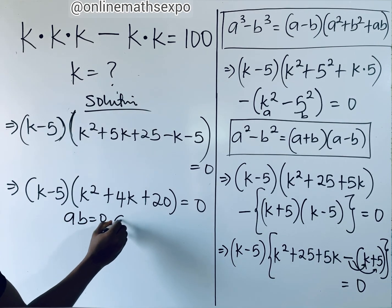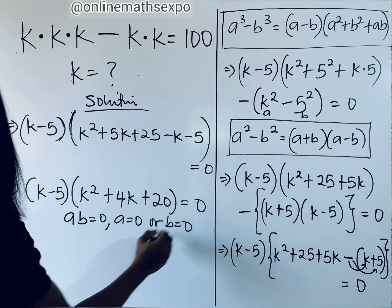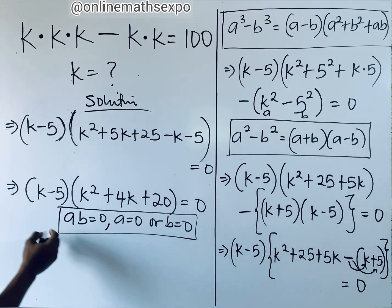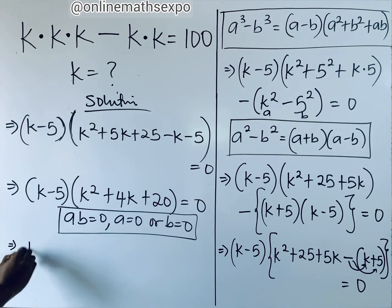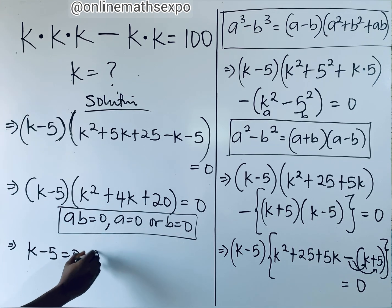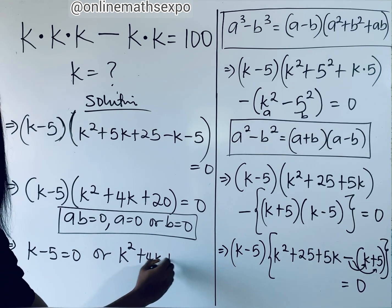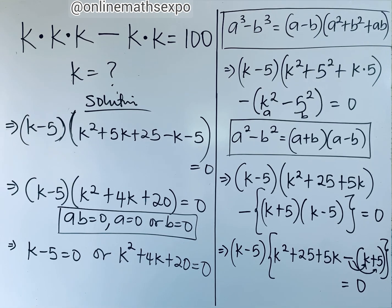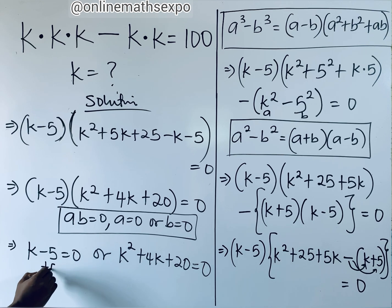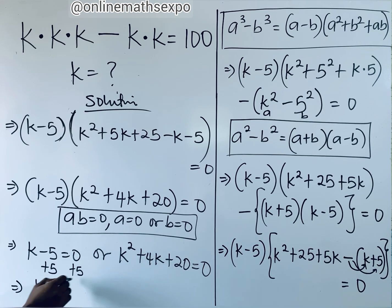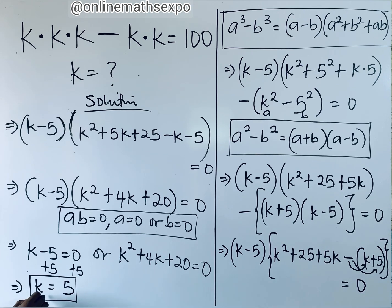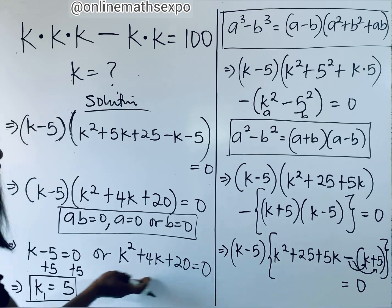So either k - 5 = 0, or k² + 4k + 20 = 0. Solving k - 5 = 0 first: add 5 to both sides, giving k = 5. That's our first value of k — the real solution.